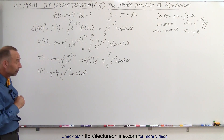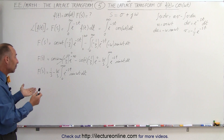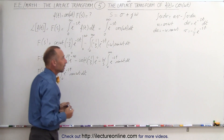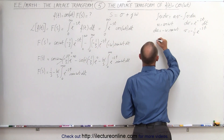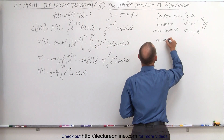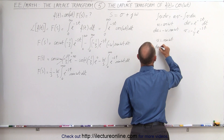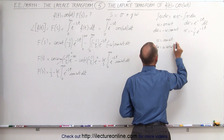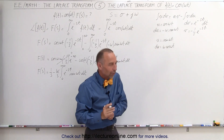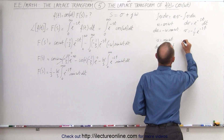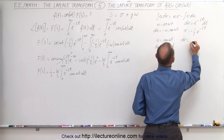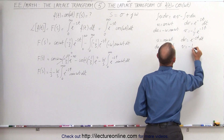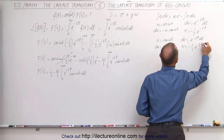We're halfway there, because now we have to apply integration by parts again to that sine integral. This time we let u equal sin(ωt), so du equals ω·cos(ωt) dt, because the derivative of sine is cosine. Then dv is the same as before, e^(−st) dt, and v is −(1/s)·e^(−st).